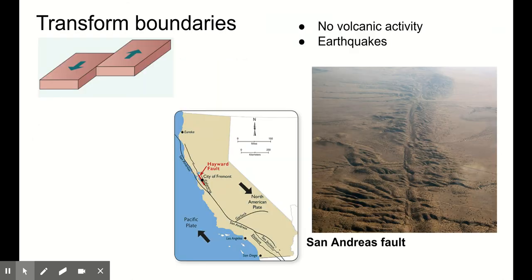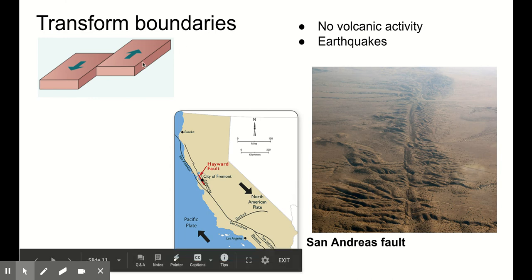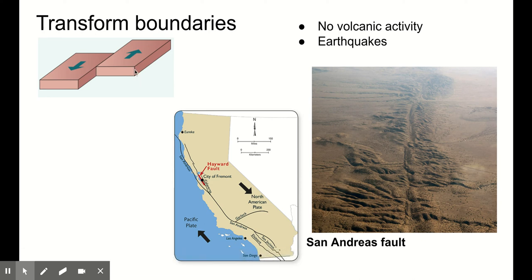Let's finish by talking about transform plate boundaries. These are by far the simplest plate boundaries — where one plate is just slipping past another. They're not colliding, not moving apart, just slipping past each other. Because of that, we don't have any subduction zones. No rock is being pushed down, no magma is being exposed, so we see no volcanic activity. We do see earthquakes because plates are moving.